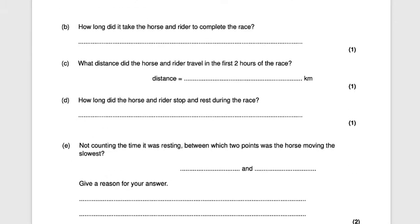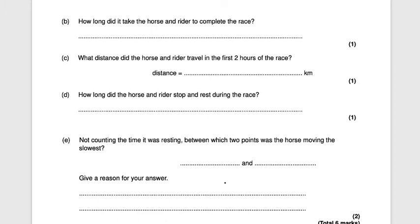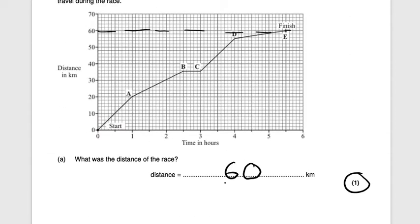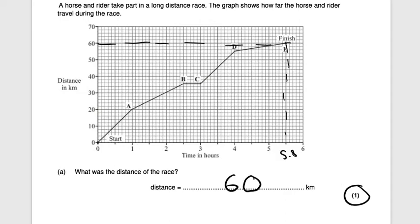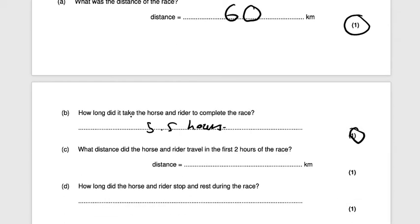How long did the horse and rider take to complete the race? Drawing a vertical line down from the finishing point gives 5.5 hours — one mark. What distance did they travel in the first two hours? Going to the two-hour mark on the x-axis and reading across gives 30 kilometers — one mark.